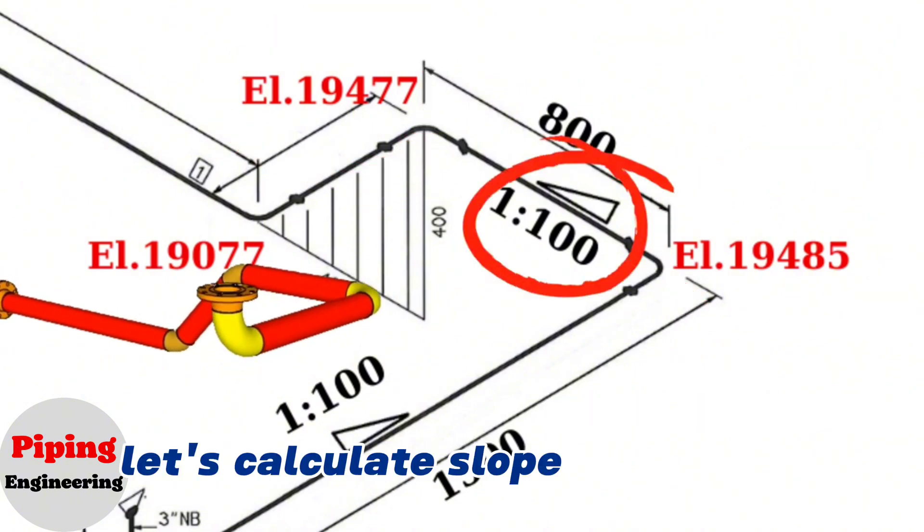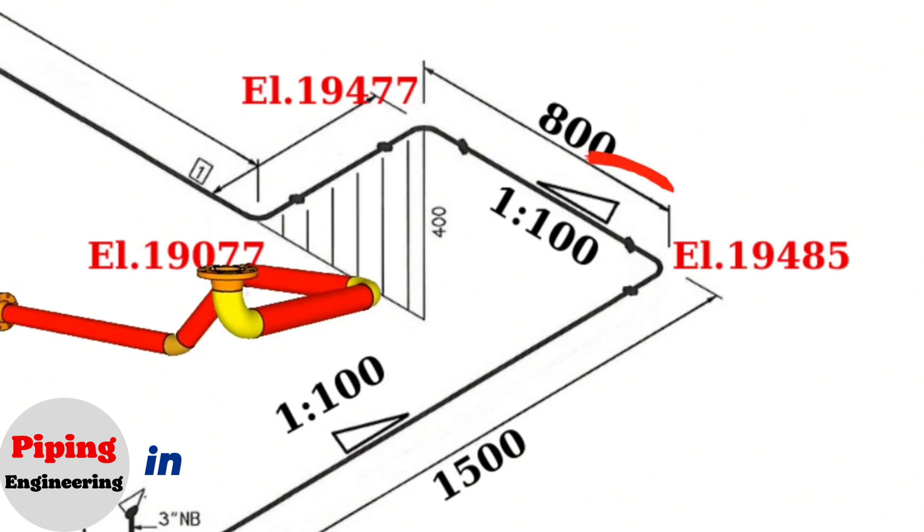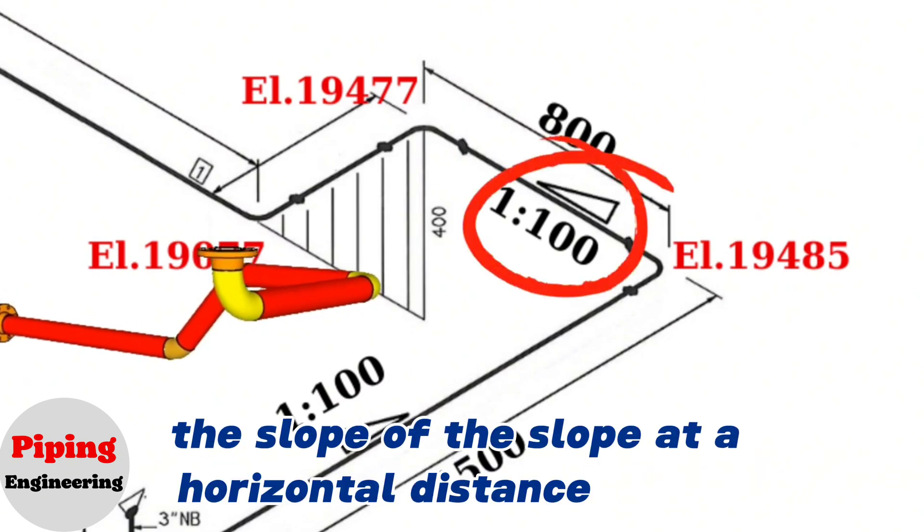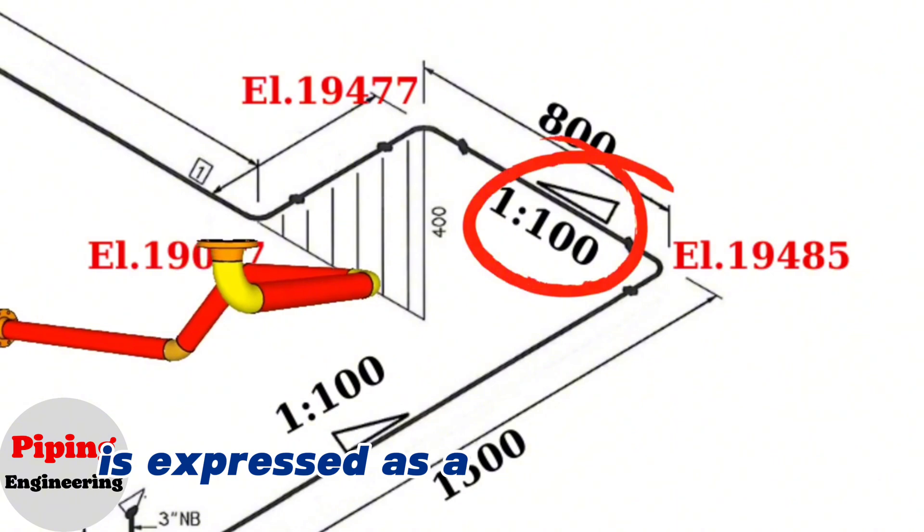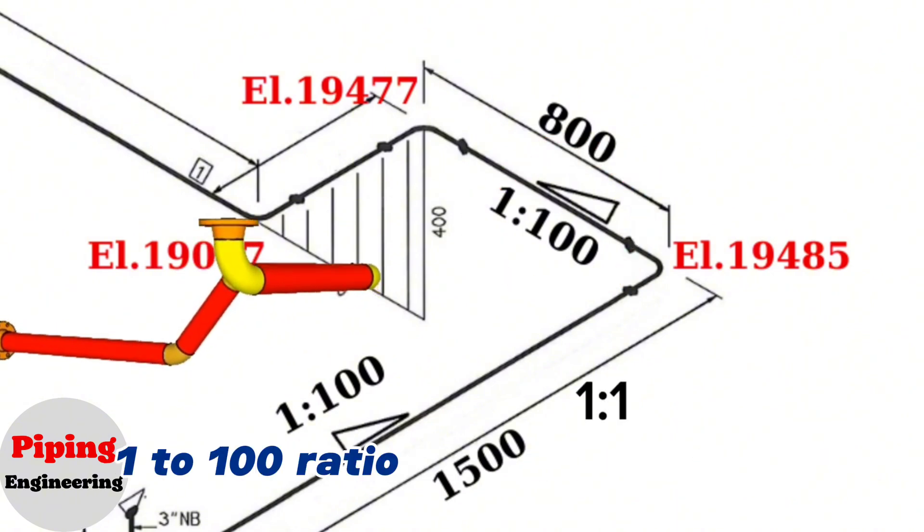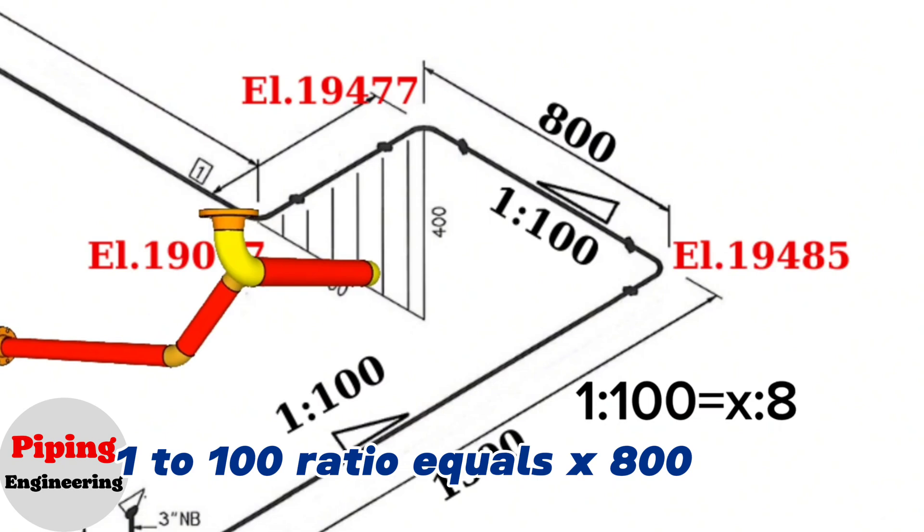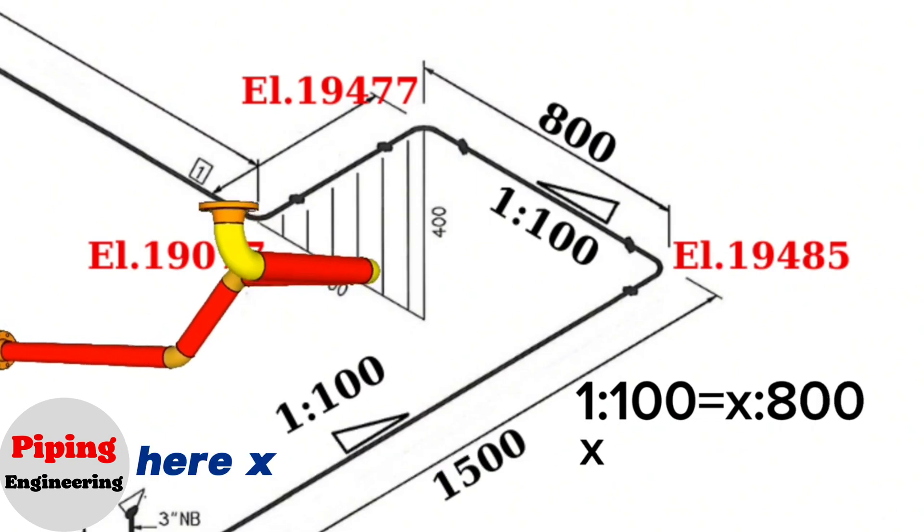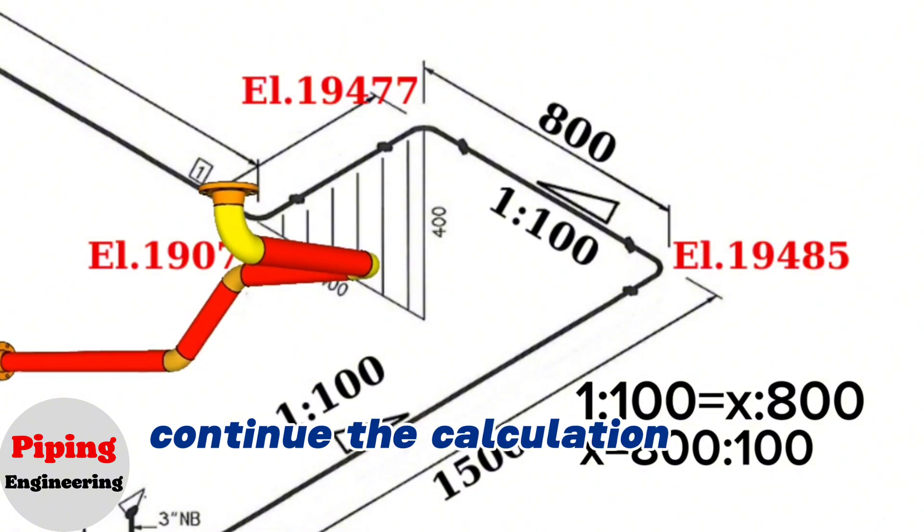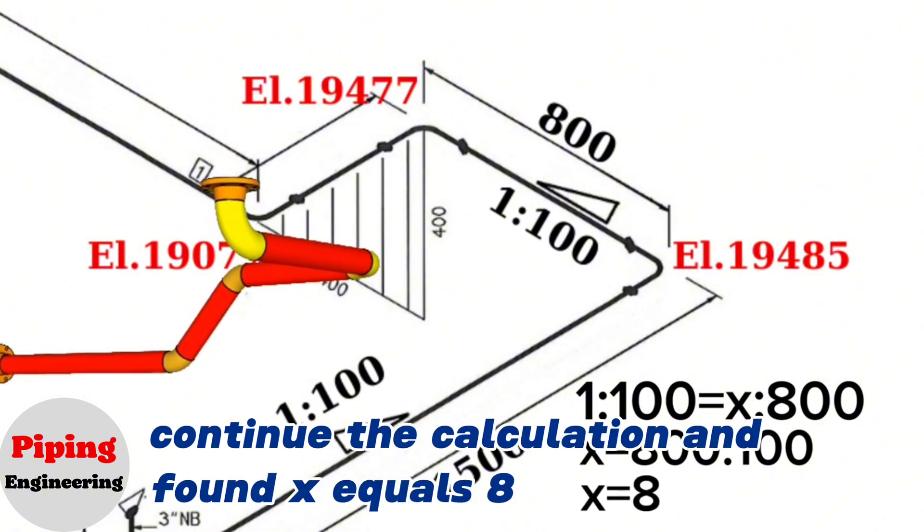Let's calculate slope ratio now. In this pipe isometric drawing, the slope at a horizontal distance of 800 is expressed as a ratio of 1 to 100. 1 to 100 ratio equals x to 800 ratio. Here x equals 800 to 100 ratio. Continue the calculation and found x equals 8 mm.